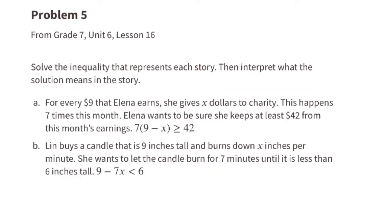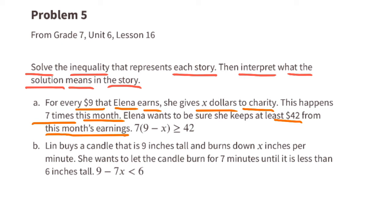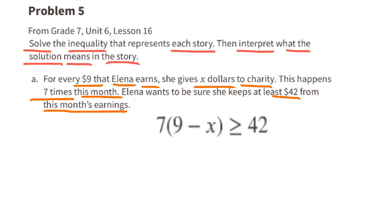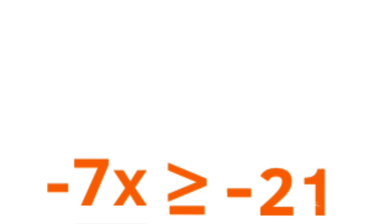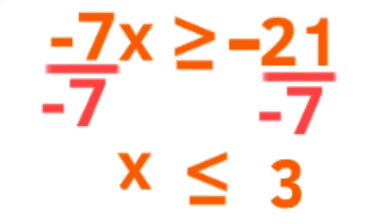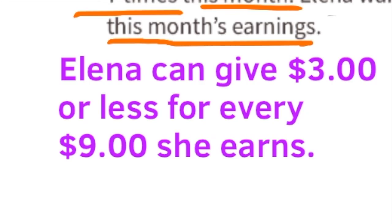Problem 5, from 7th grade Unit 6 Lesson 16. Solve the inequality and interpret the solution. Part A: For every $9 that Elena earns, she gives x dollars to charity, and she wants to keep at least $42. We get 7 times (9 minus x) is greater than or equal to 42. Subtracting 63 from both sides gives negative 7x is greater than or equal to negative 21. Dividing both sides by negative 7 and flipping the inequality sign gives x is less than or equal to 3. That means Elena can give $3 or less for every $9 she earns.